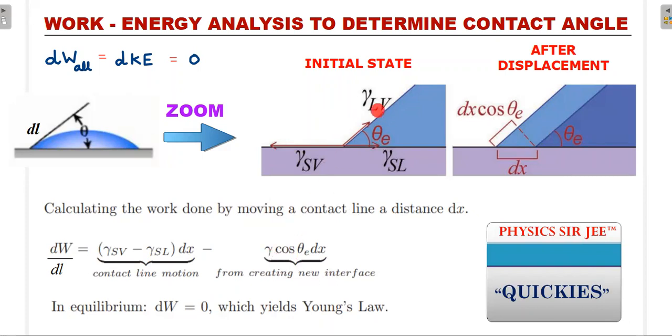So you could see that the same length was here; the extra creation is here. So that's what we have written here. So from creation of the new interface, this γ without the subscript is nothing but the γ_LV. And in equilibrium, remember at the start the kinetic energy was zero, at the end also the kinetic energy is zero. So dW_all is equal to dKE is coming out to be zero. So the change in kinetic energy is zero, and that is when the equilibrium gets established. So once you equate this to zero and cancel the dx, you end up getting the required cos inverse formula that we saw even in the force method.